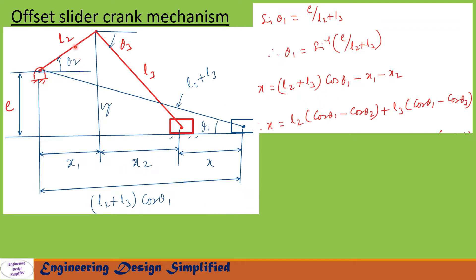The horizontal component x1 can be written as l2·cos(theta2), and x2 can be written as l3·cos(theta3). For clockwise rotation of theta3, the displacement equation becomes: x = l2·cos(theta1 − theta2) + l3·cos(theta1 − theta3). After substituting the x1 and x2 values and rearranging, we get this equation for the displacement of the slider at any given angles theta2 and theta3.